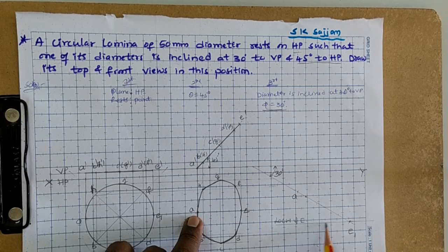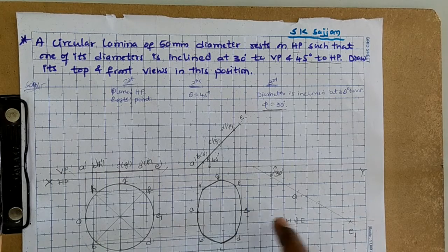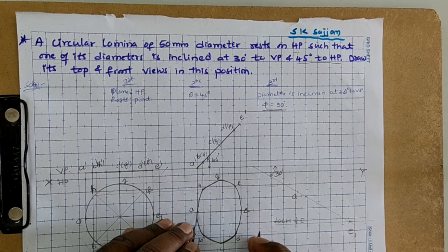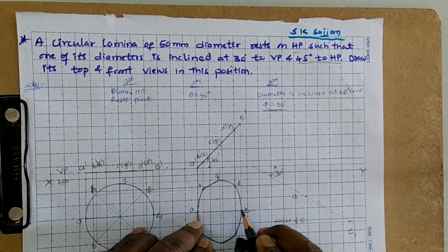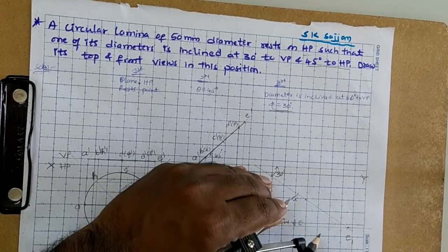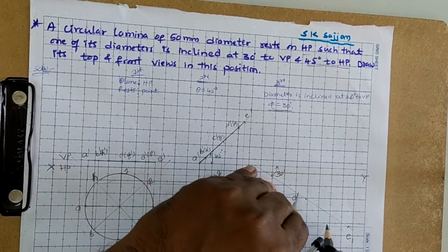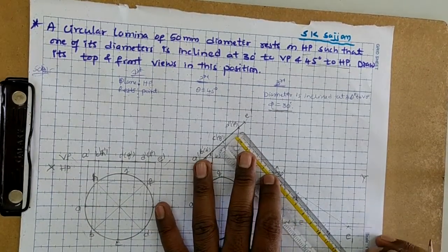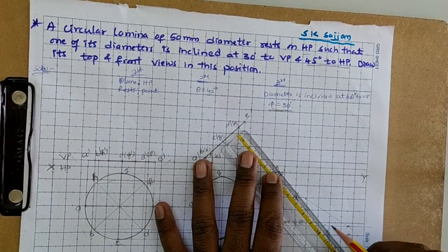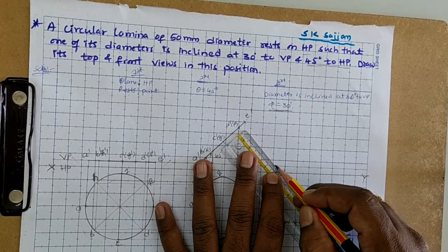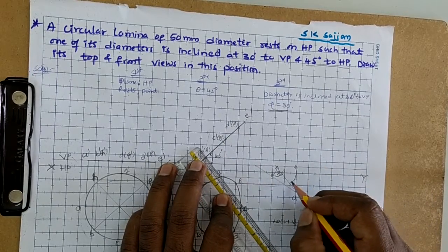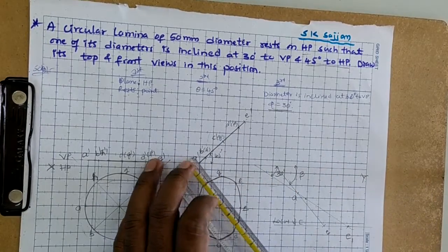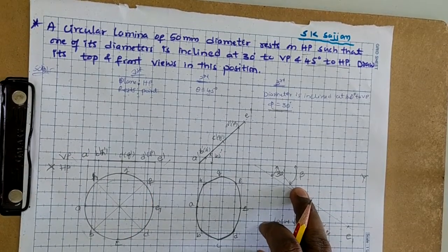Measure A to E. Mark E on the locus line. Join A and E then extend up to the XY line. Measure this angle — that is beta, or the apparent angle. We have to find out this beta, the apparent angle.